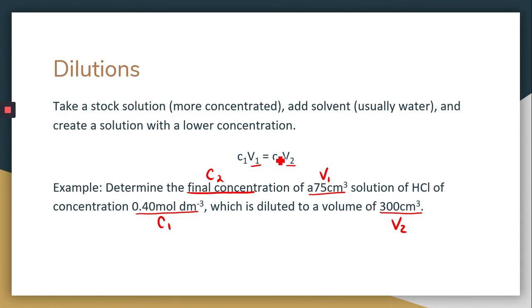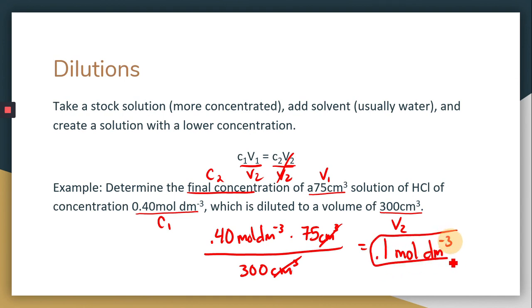And since we're solving for C2, we know we would have to divide both sides by V2. So we would have 0.40 moles per decimeter cubed times 75 centimeters cubed divided by 300 centimeters cubed. So see the centimeters cubed would cancel out. So it doesn't matter if it's in centimeters or decimeters. Multiply and divide. We would want one significant figure because our 300 centimeters cubed is one significant figure. So the answer would be 0.1 moles per decimeter cubed as our new concentration. Notice that as volume increases, the concentration should decrease. So that is something that you can watch out for.